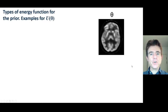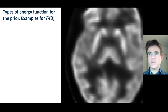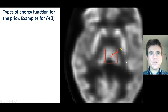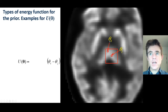Let's take an example of how the energy function u could be defined. Here I have an example PET image, and I'm looking at a particular pixel with index j, with image value theta. We can consider other pixels in the neighbourhood, labelling those pixels with index c and value theta_c.